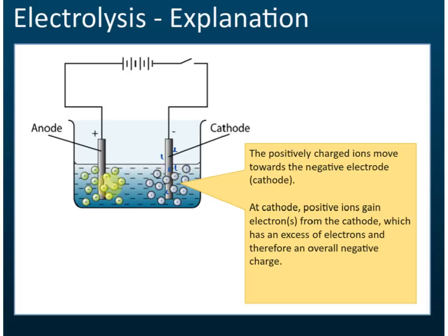Because a lot of electrons have been pumped by the batteries to go to the cathodes, there are a lot of electrons there. And the positive ions will receive those electrons. So at the cathode, positive ions gain electrons from the cathode, which has an excess of electrons and therefore an overall negative charge.